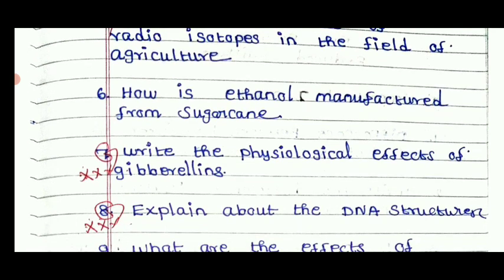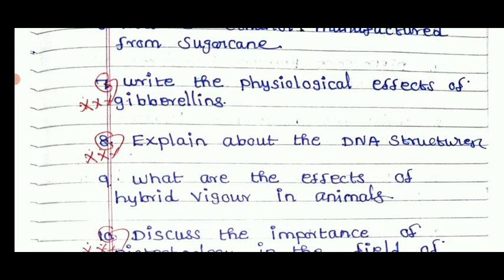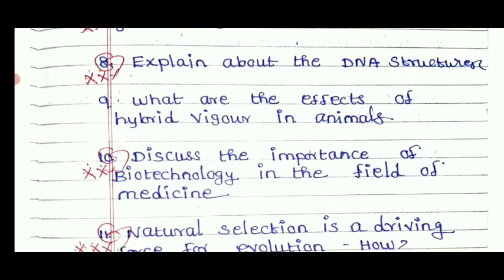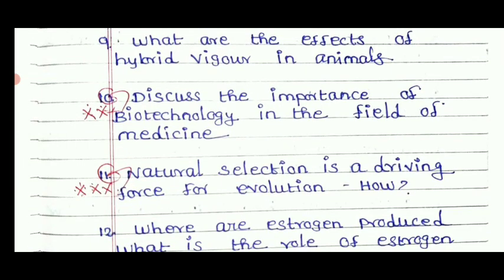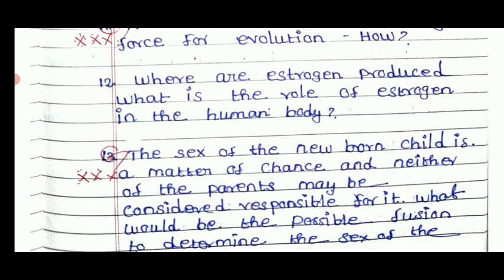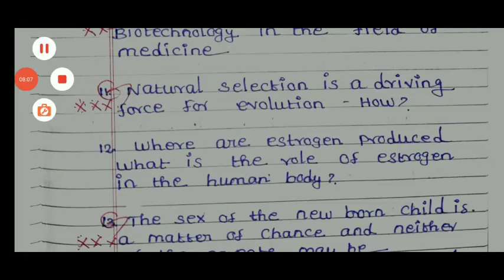How is ethanol manufactured from sugarcane? Write the physiological effects of gibberellins — you can learn gibberellins, cytokinin, and auxin from the interior. Explain the DNA structure. What are the effects of hybrid vigour in animals? Discuss the importance of biotechnology in the field of medicine. Natural selection is a driving force of evolution. Where is estrogen produced and what are the roles of estrogen in the human body? The sex of a newborn child is determined by neither parent — discuss the possible means of determining the sex of a child. These are 7-mark questions — about 13 questions in total.